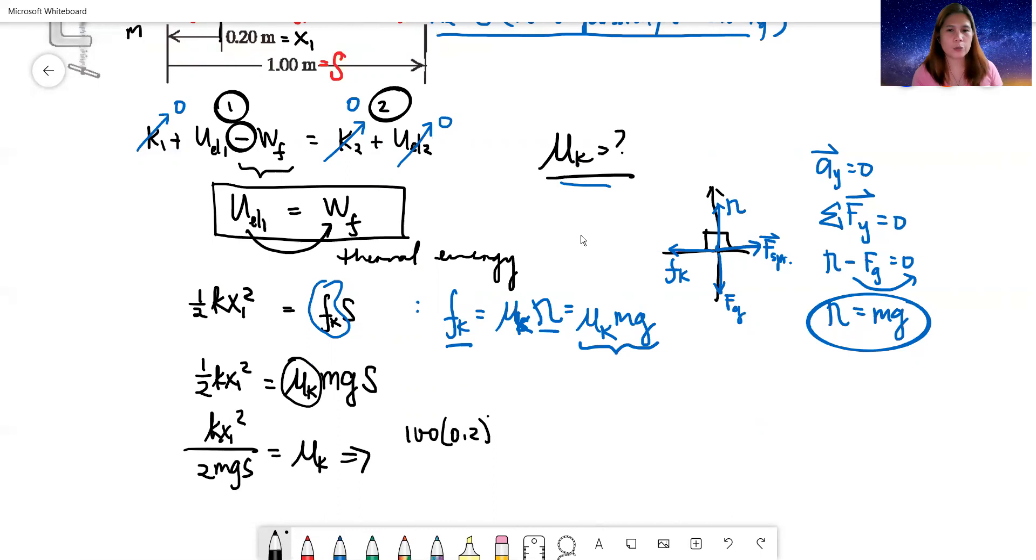Now you have an equation for mu k. It's just now a matter of substitution. This is 100 times 0.2 squared over 2 times the mass, half a kilogram. G is just positive 9.8, and then s is just 1 meter. This gives us 0.408. No unit for mu sub k. It's a pure number. Equals mu sub k. Therefore, this is our final answer.